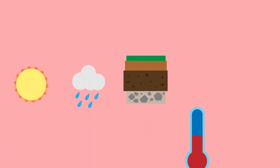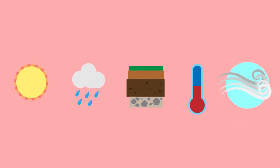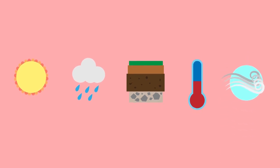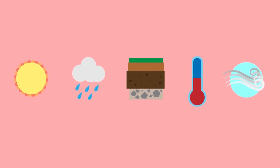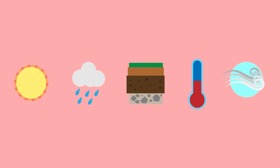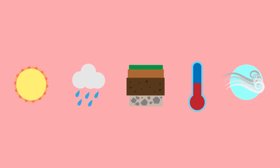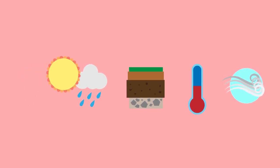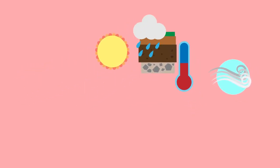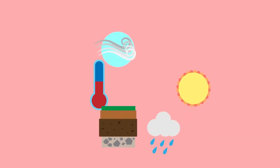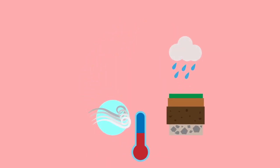Sunlight, precipitation, soil composition, temperature, and air currents are all examples of abiotic components that can be found within an ecosystem. While each of these components is important by itself, how they interact with each other also greatly influences their environment.